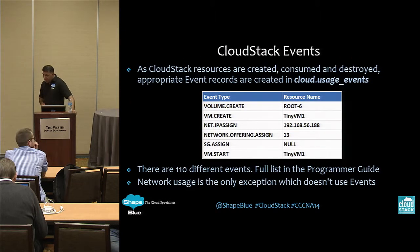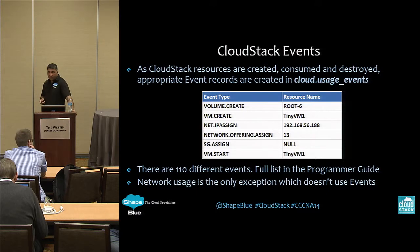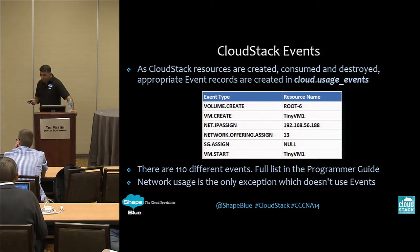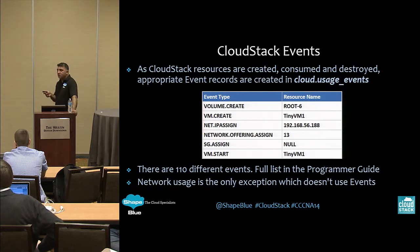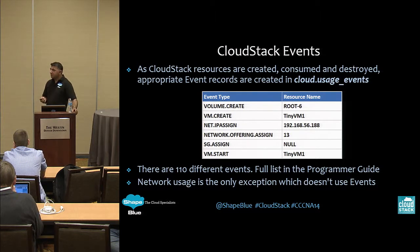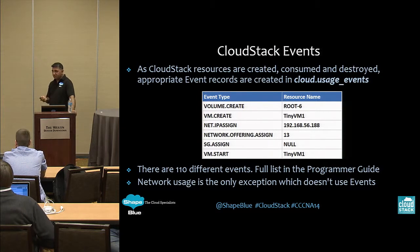The way the usage server actually works is it fetches or creates usage data from the actual CloudStack events that take place within CloudStack. As resources are created, deleted, paused, et cetera, those event records are written into the CloudStack database — specifically to the cloud usage underscore events table. For example, when a VM is created, a number of events will be written to the CloudStack events table: a volume is created, the VM itself is created, an IP is assigned to the VM, it's assigned a network offering, and then the VM is started — typically six separate events recorded when a VM is first created.